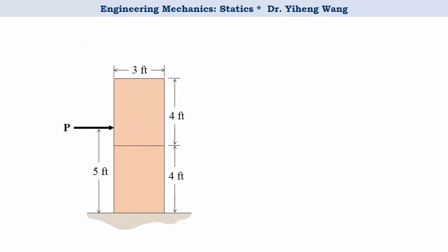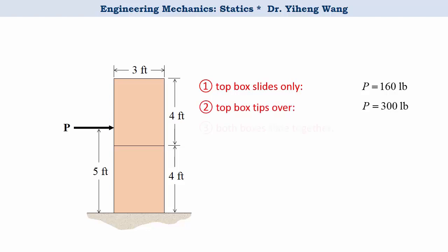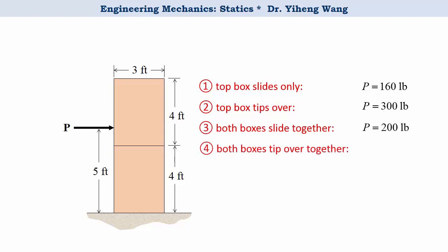Now we have analyzed all four situations. To summarize: if the top box slides only, P = 160 lbs; if the top box tips over, P = 300 lbs; if both boxes slide together, P = 200 lbs; and if both boxes tip over together, P = 120 lbs. Through comparison, the last scenario requires the least force, so the answer is 120 pounds — both boxes will tip over together.